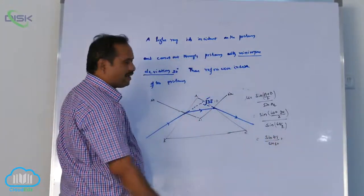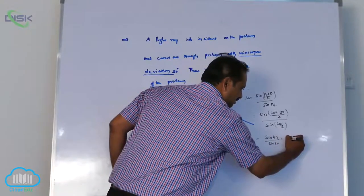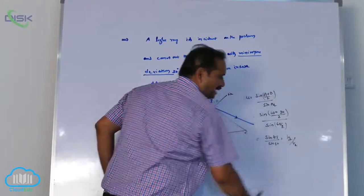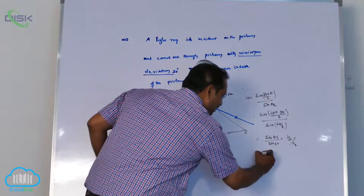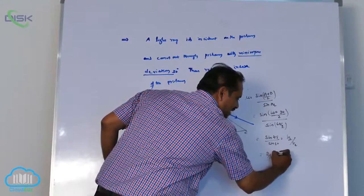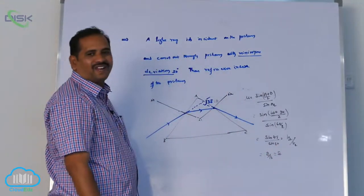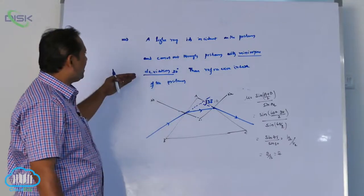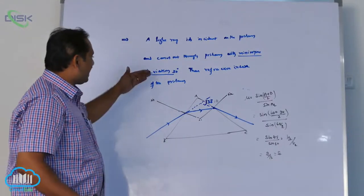Sine 45 is 1 by root 2. Sine 30 is 1 by 2, all of you know I think so. That is 2 by root 2 - I am going to get what sir? Root 2 is the refractive index of the prism. This is the way of approaching the problem with the diagrammatic approach.